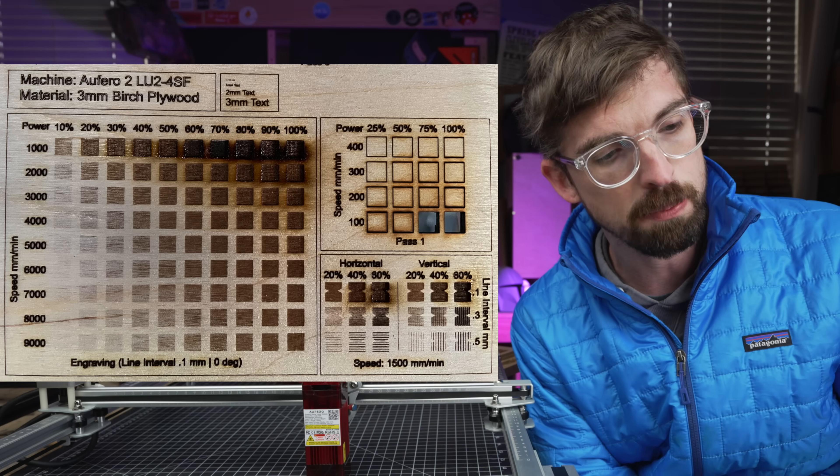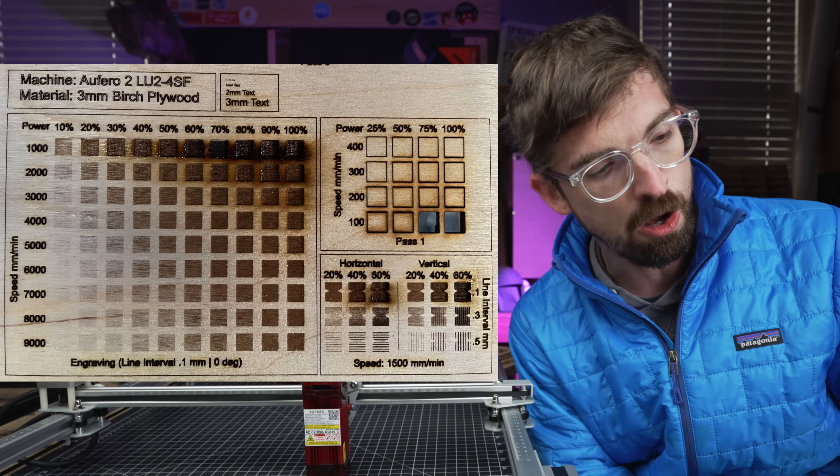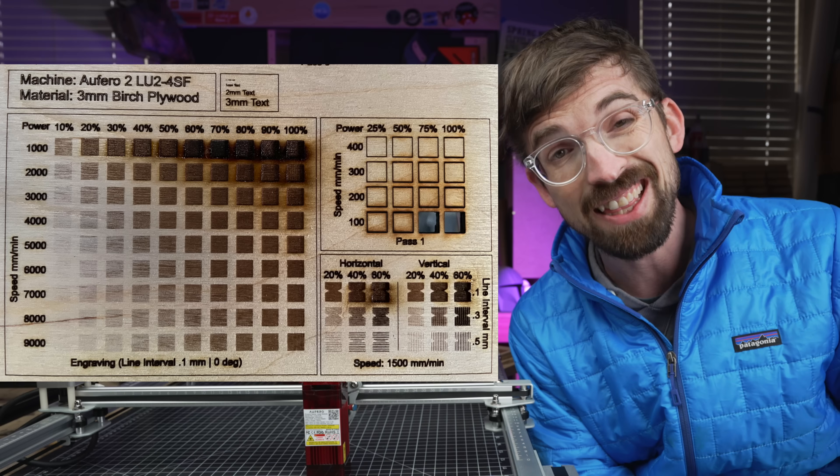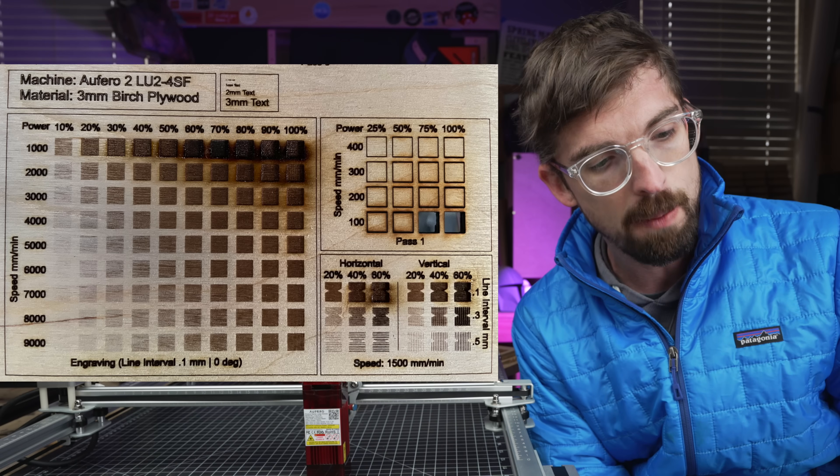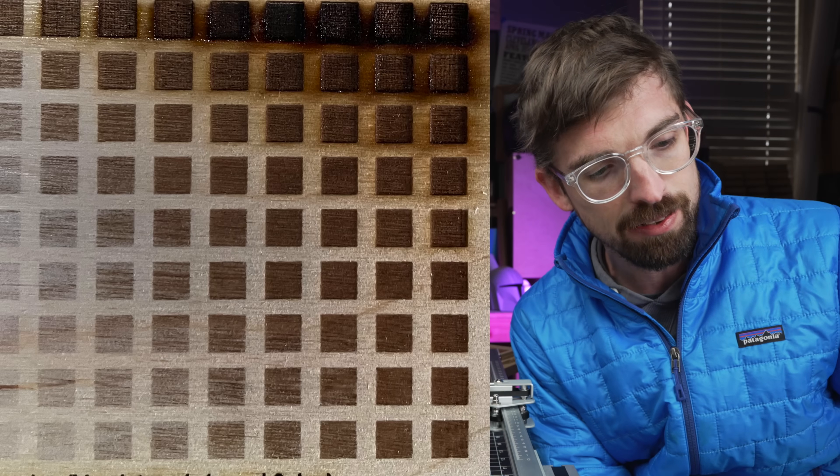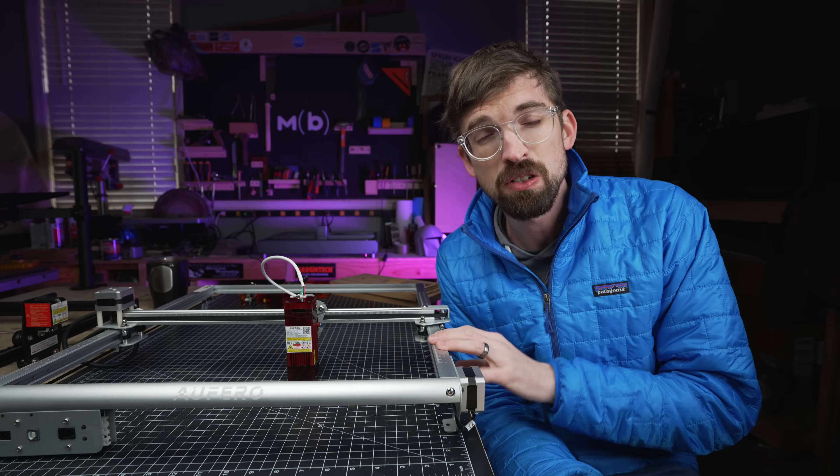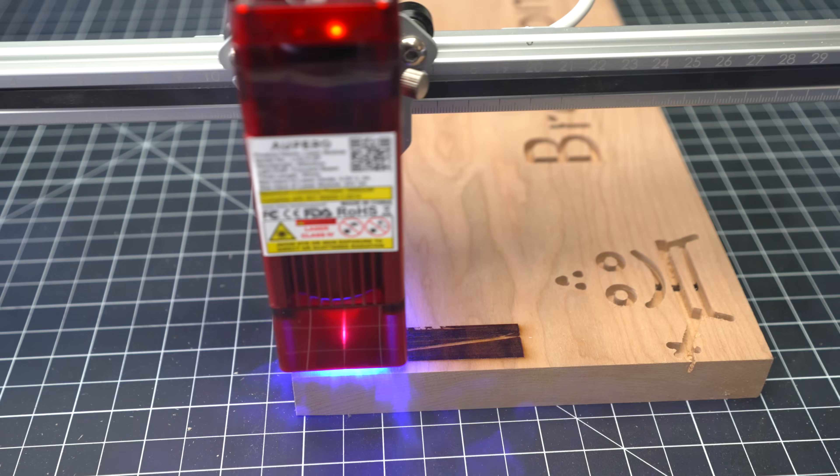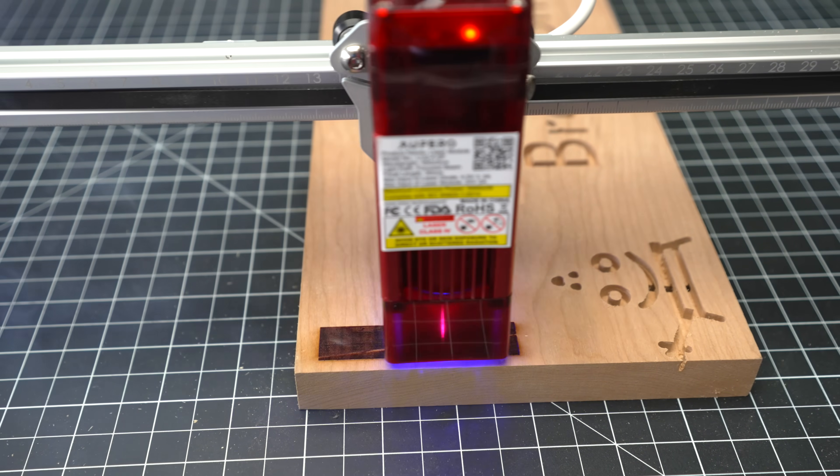Now this is three millimeter birch plywood. And you can see you are going to get pretty good engraving pretty much all the way up to even 9,000 millimeters per minute. You can kind of tell as the speed is going up, the crispness of those boxes, it starts to get a little bit wobbly. So I really wouldn't run this much faster than 5,000 millimeters per minute. So half of the maximum speed.